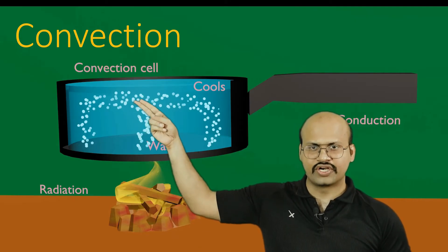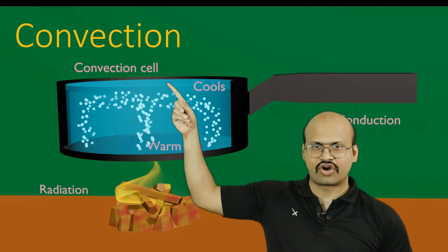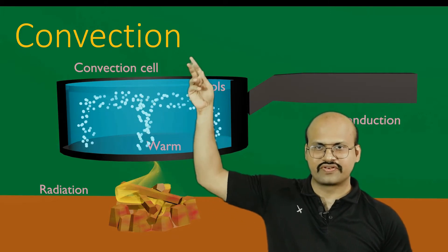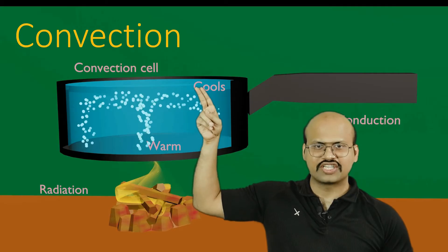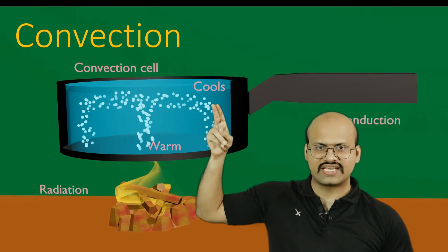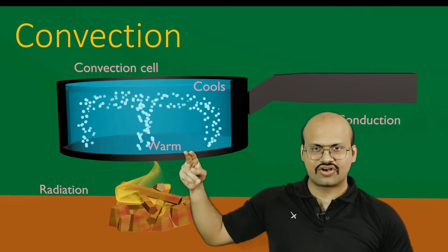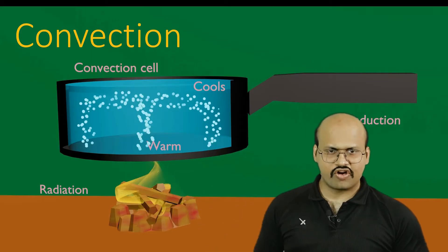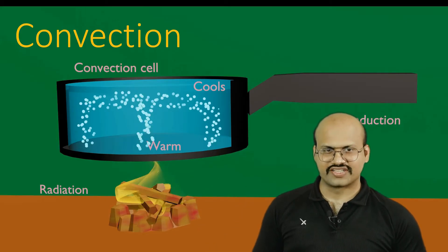The fluid which releases heat to the water above and to the atmosphere will cool down, and once it cools down it will sink back again — this process continues and is called a convection cell. A very similar mechanism occurs in convectional rainfall.